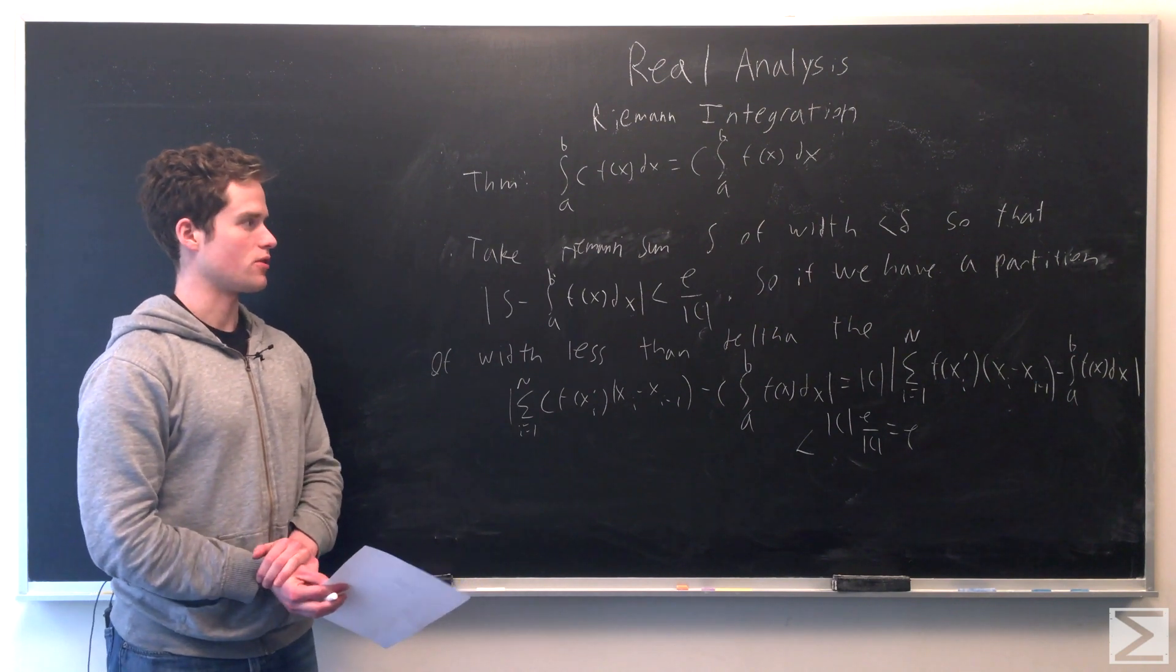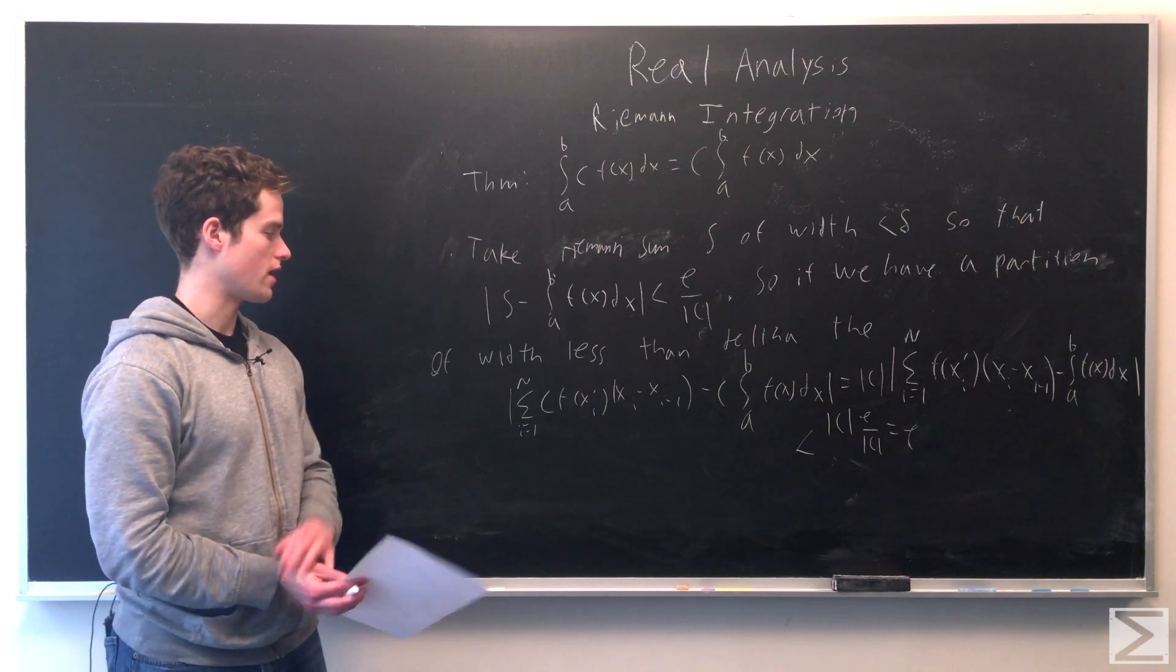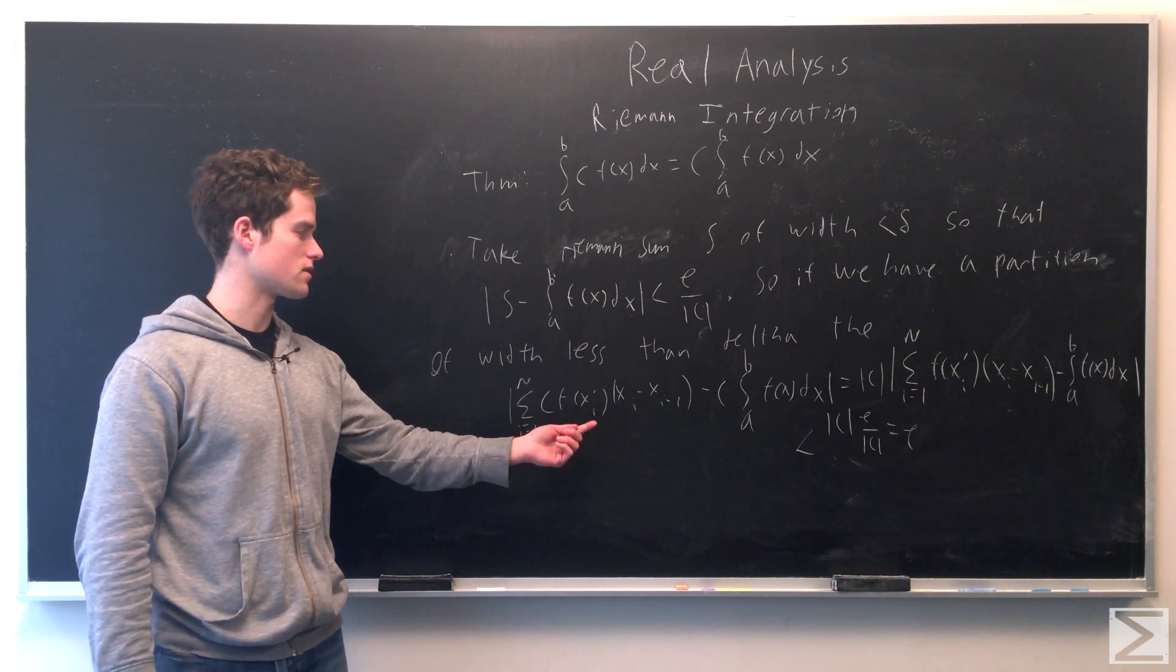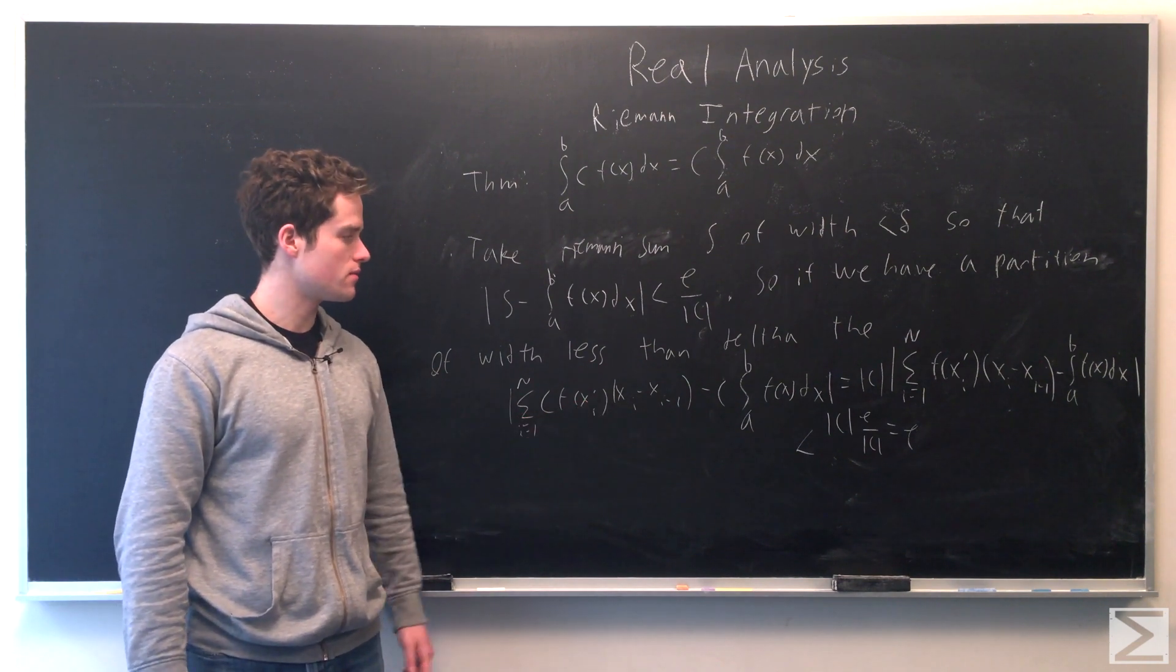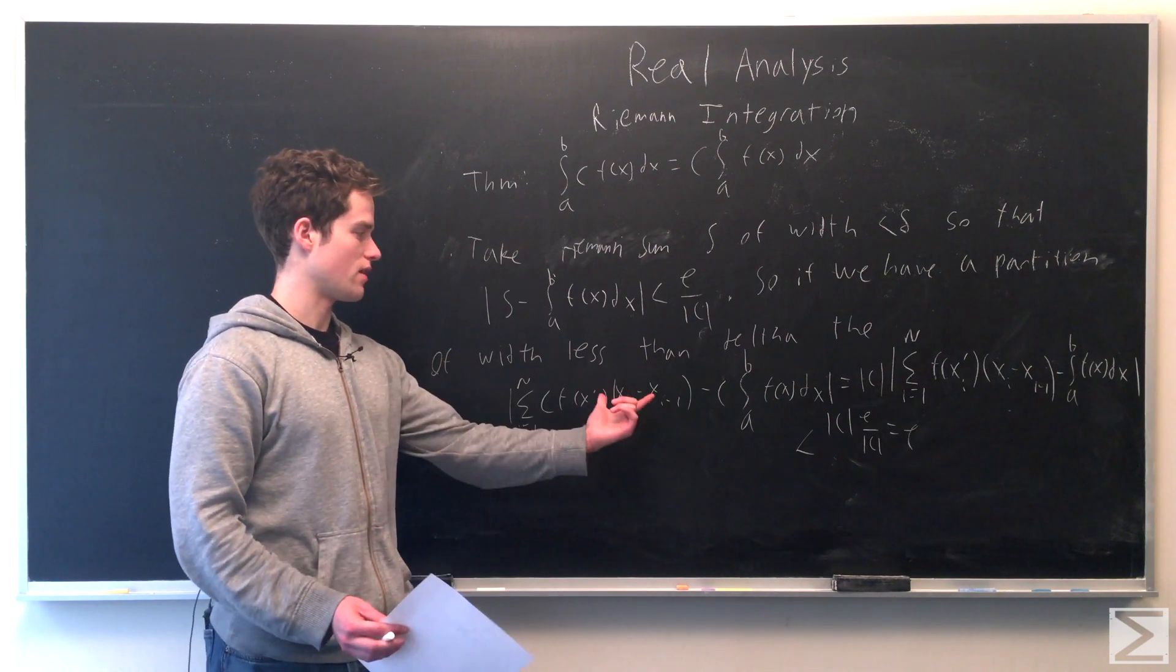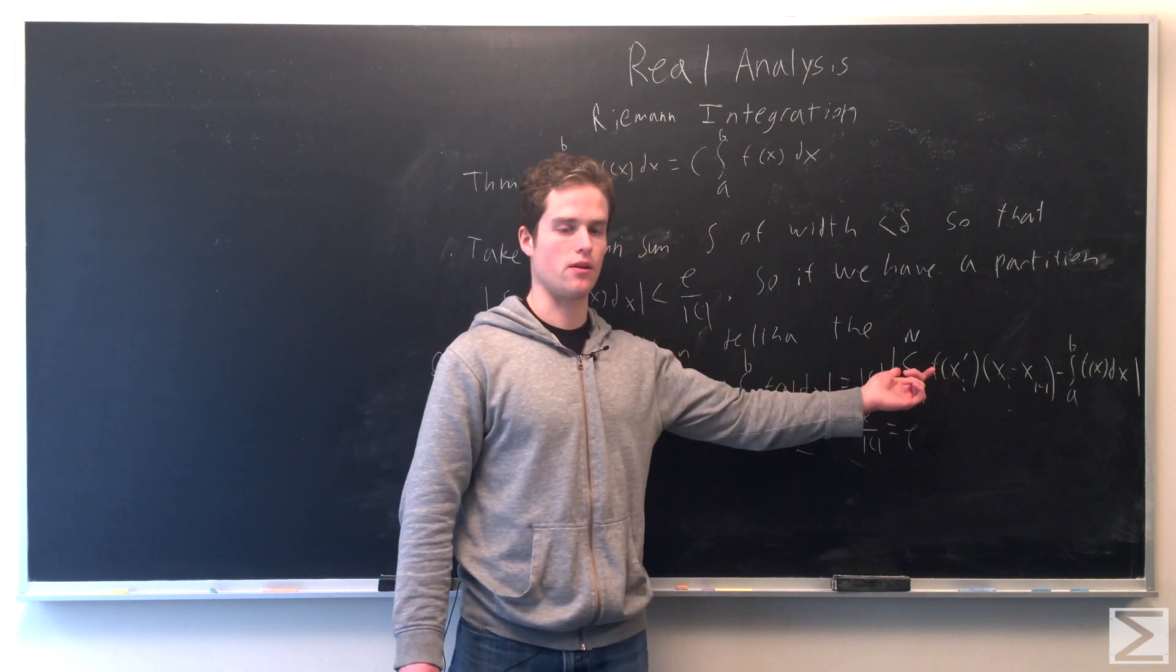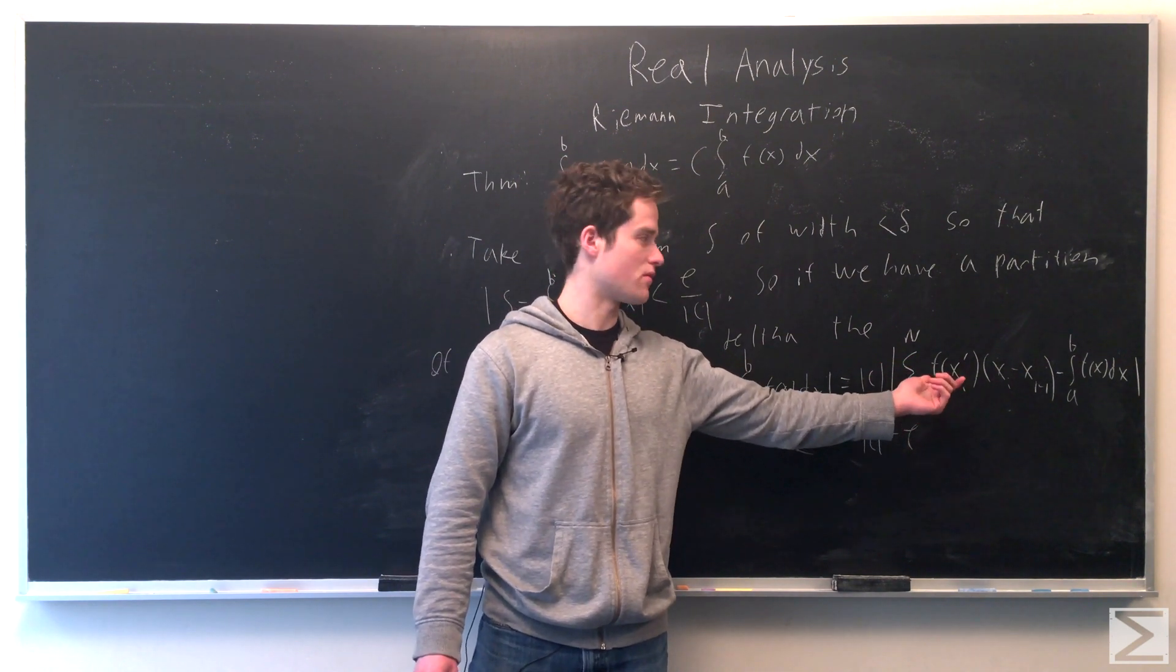If we take our partition to be of width less than δ, then we have the sum from i=1 to n of c·f(xᵢ')·(xᵢ - xᵢ₋₁), where xᵢ' again is just some value between xᵢ and xᵢ₋₁. That times (xᵢ - xᵢ₋₁) minus c times the integral from a to b of f. Taking the absolute value of that, we're going to pull out c to get |c| times the absolute value of another Riemann sum minus the integral from a to b of f(x). But this is just our ordinary Riemann sum difference for f(x).